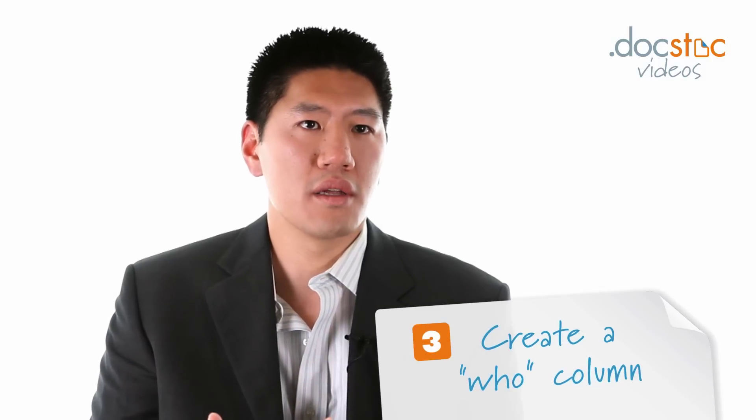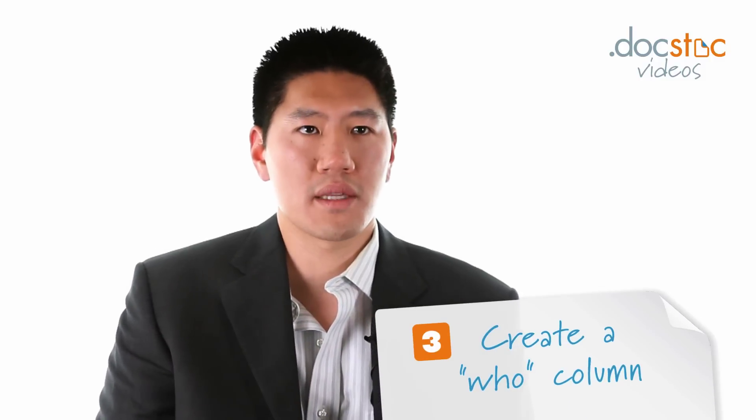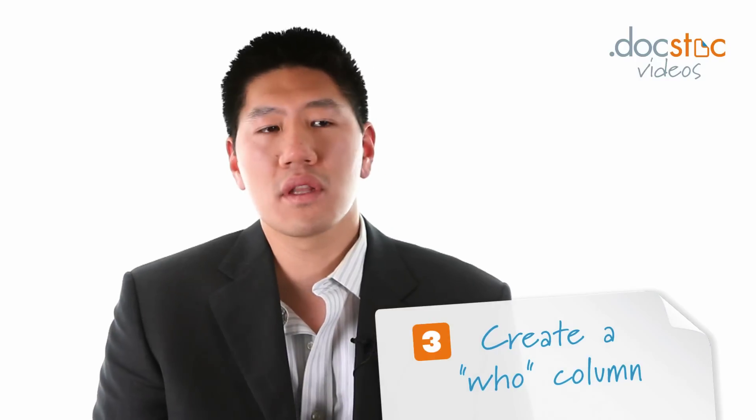Next to that column — this is step three — you're going to have a Who column. Under the Who column you're going to list who's responsible for that particular action item. Even though there's potentially more than one person working on it, I would put down just one person whose shoulders that task falls on, because when there are two or three people on the list it might be unclear who's supposed to take care of it.